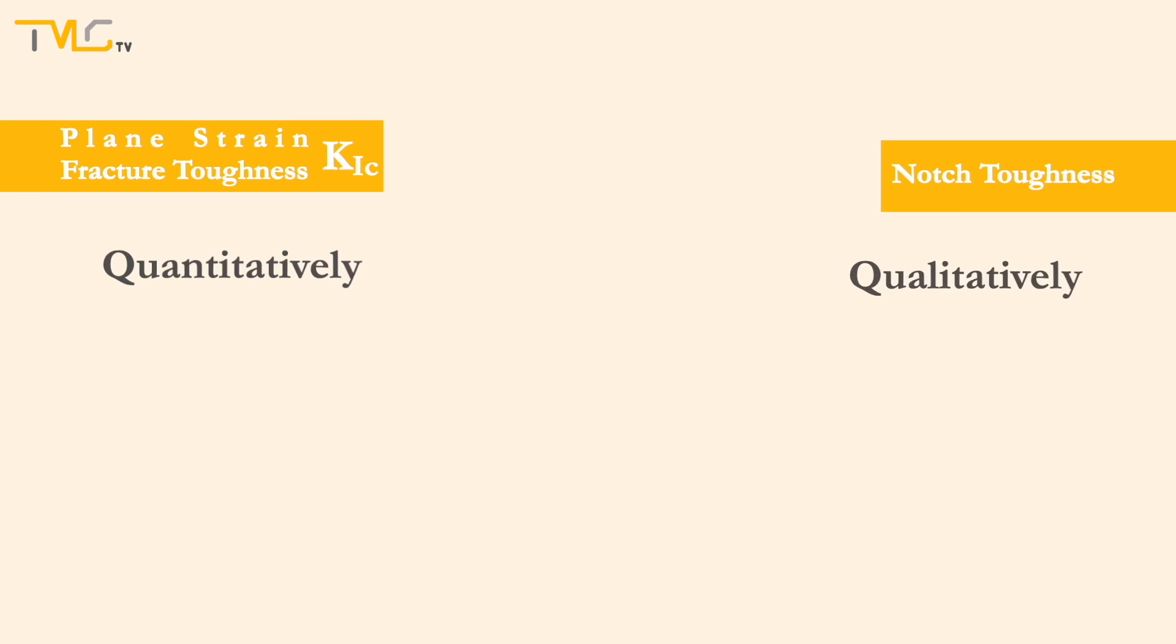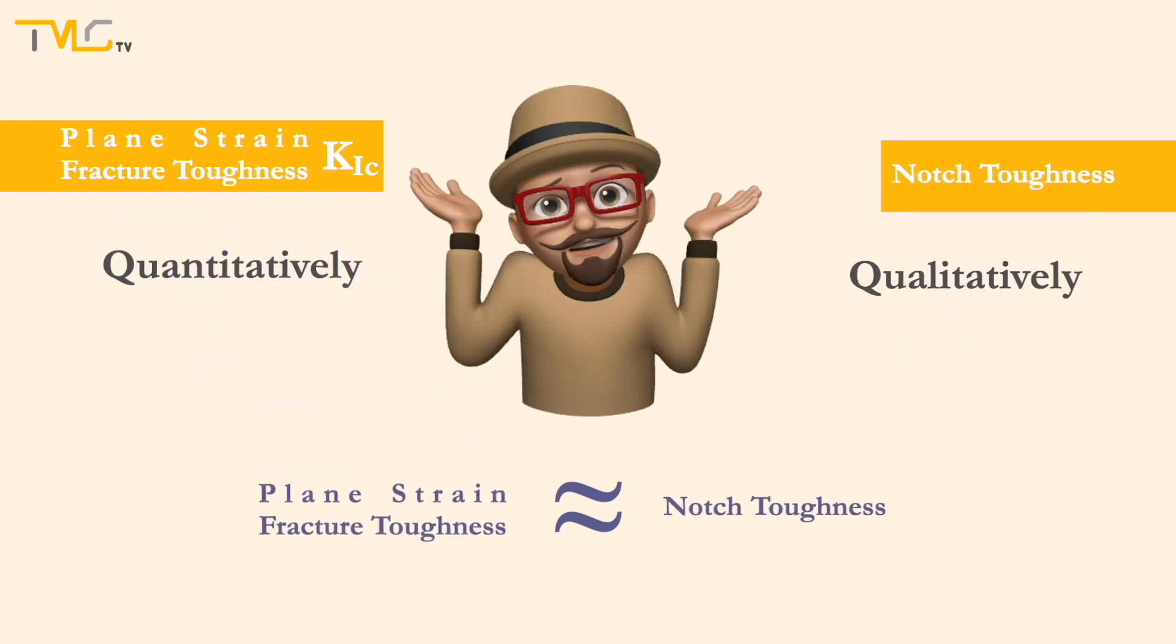To determine the fracture characteristics of a material, both plane strain fracture toughness and notch toughness can be used. Plane strain fracture toughness is used more quantitatively for design purposes, whereas notch toughness is used more for qualitative evaluation. People have tried to relate plane strain fracture toughness and notch toughness mathematically. However, so far little to no success was achieved in this task.